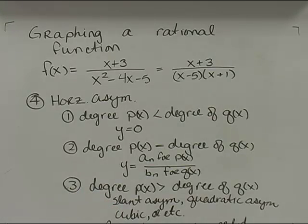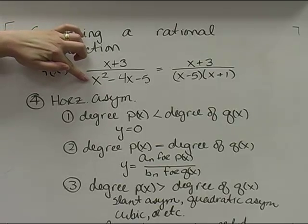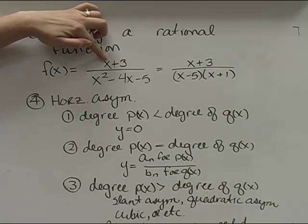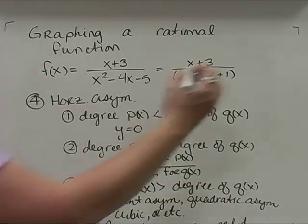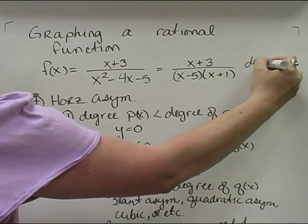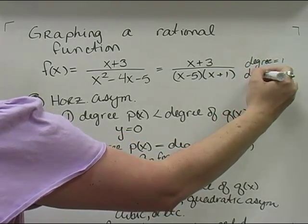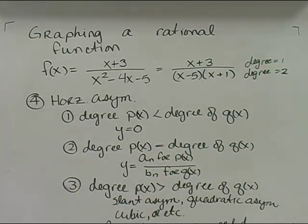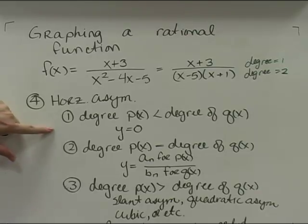Looking at our rational function, on the top we have a degree of 1 and on the bottom we have a degree of 2. The highest power on top is 1 and the highest power on the bottom is 2. So for this particular rational function, it falls into case number one — the degree of the numerator is less than the degree of the denominator — so we're going to have a horizontal asymptote at y equals 0.